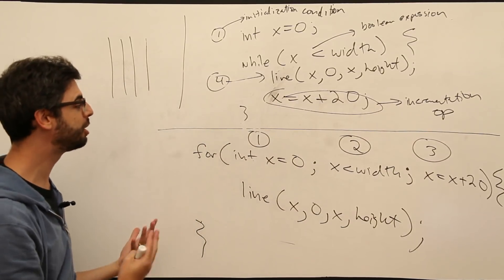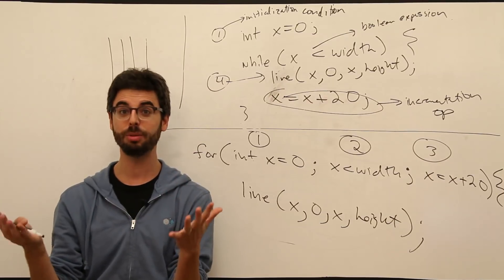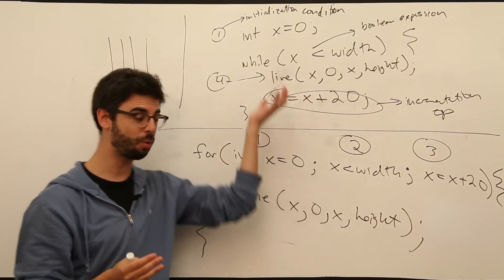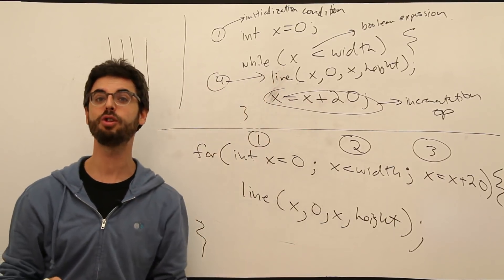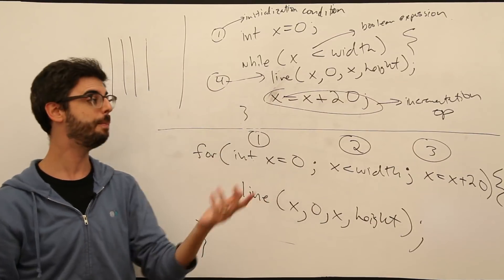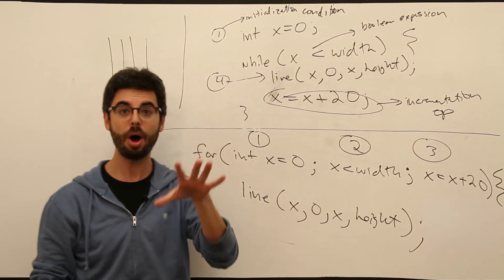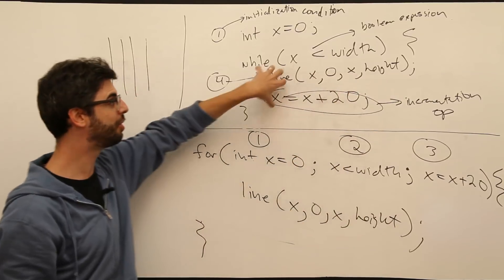I would suggest as an exercise: what you should be doing is find something you made that has a while loop in it, try to rewrite it with a for loop, and get the exact same result. In fact, you could pause right now and do that with this grid example.